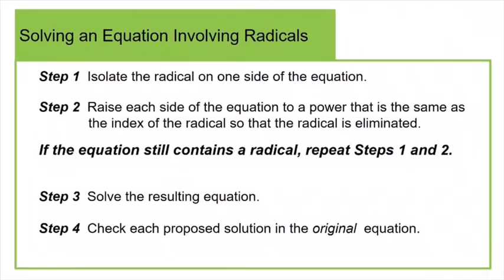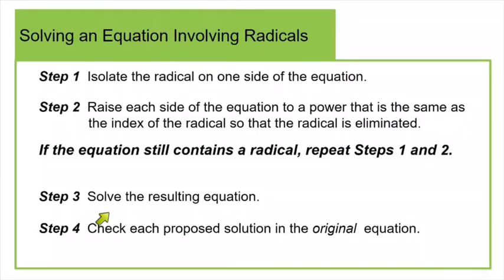In this section, almost all the problems we're going to do involve square roots, so we will usually be squaring both sides. If your problem started out with more than one radical, then squaring both sides is only going to eliminate one radical. So if the equation still contains a radical, then you are going to repeat steps one and two. Then when you've gotten rid of all the radicals, you can solve the resulting equation, and then check each of your solutions in the original equation.